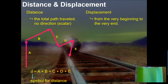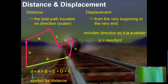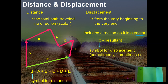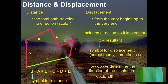When we talk displacement, though, displacement is from the very beginning to the very end. So starting at this point where I started with A, and moving to this point where I ended with E, that is going to be my displacement. It does include a direction, so it's going to be a vector. The symbol for that is going to be an X, which will be your resultant value. Sometimes we'll use Y if we're talking in the Y direction, or R if we want to talk about any direction in general. We would determine the direction using vectors.